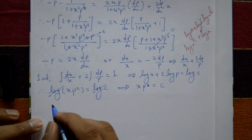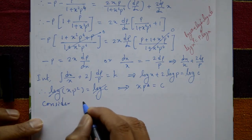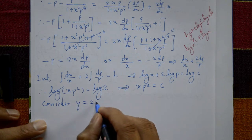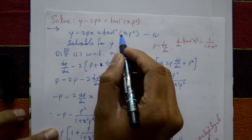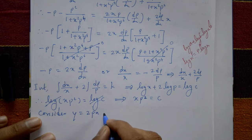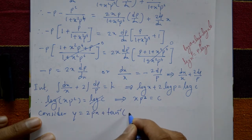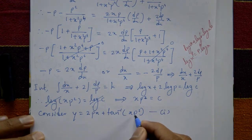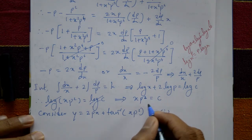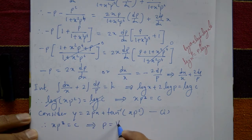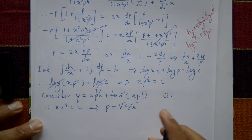Now from equation number one, y equals 2px plus tan inverse of xp squared. We need to eliminate p. Since xp squared equals c, we get p equals square root of c divided by x. This is equation number two.